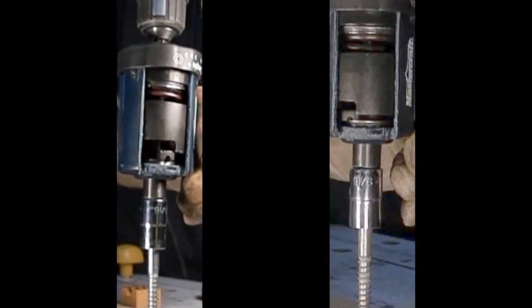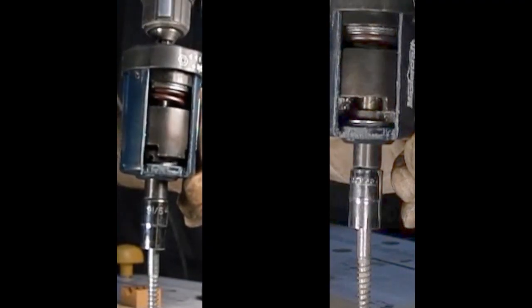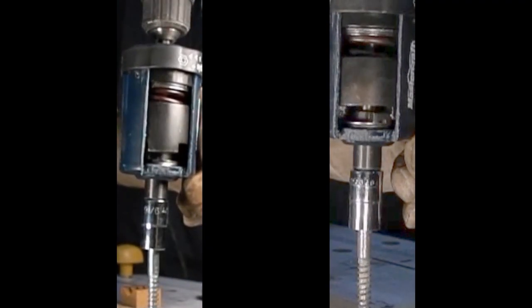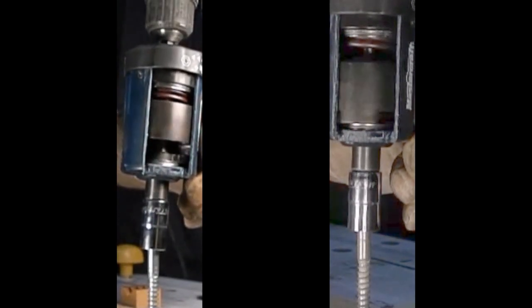Filmed at 1200 frames per second, you can see how the hammer lifts up, spins around, and is driven down by the spring and forward by the drill at a much higher speed than if it were just driven by the drill directly.